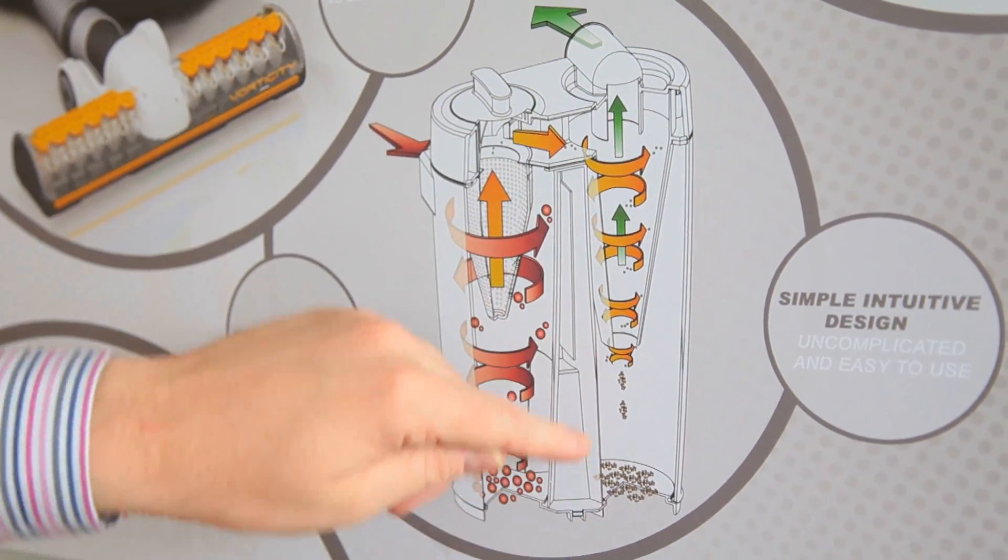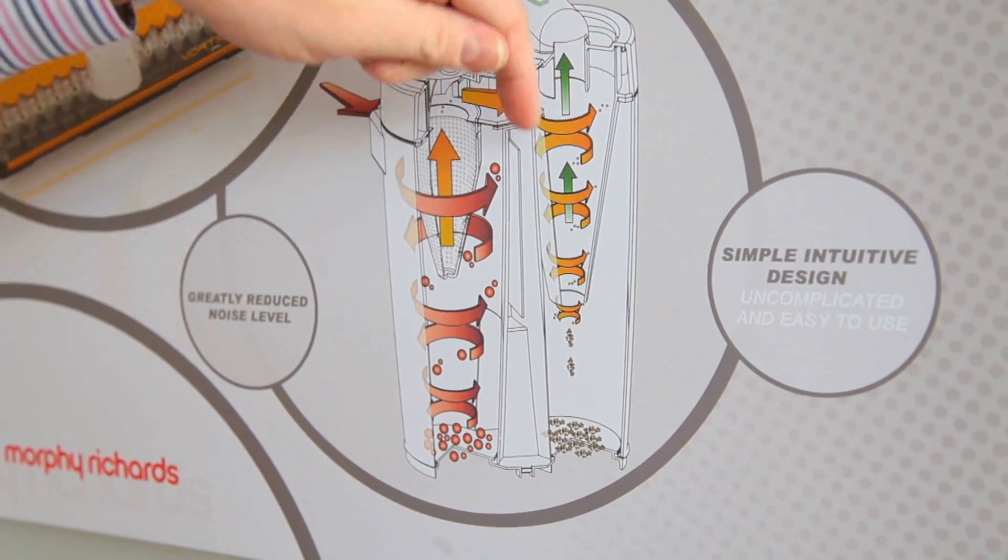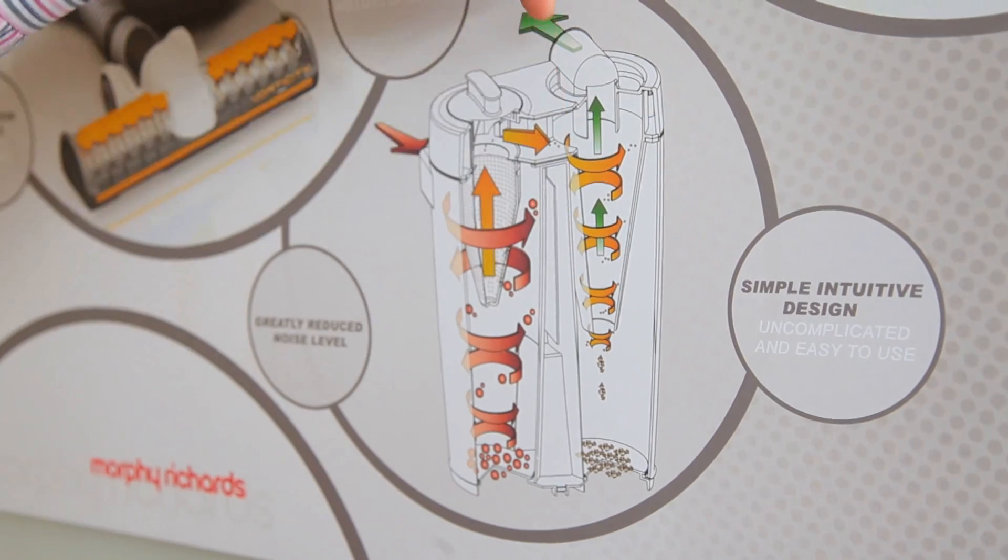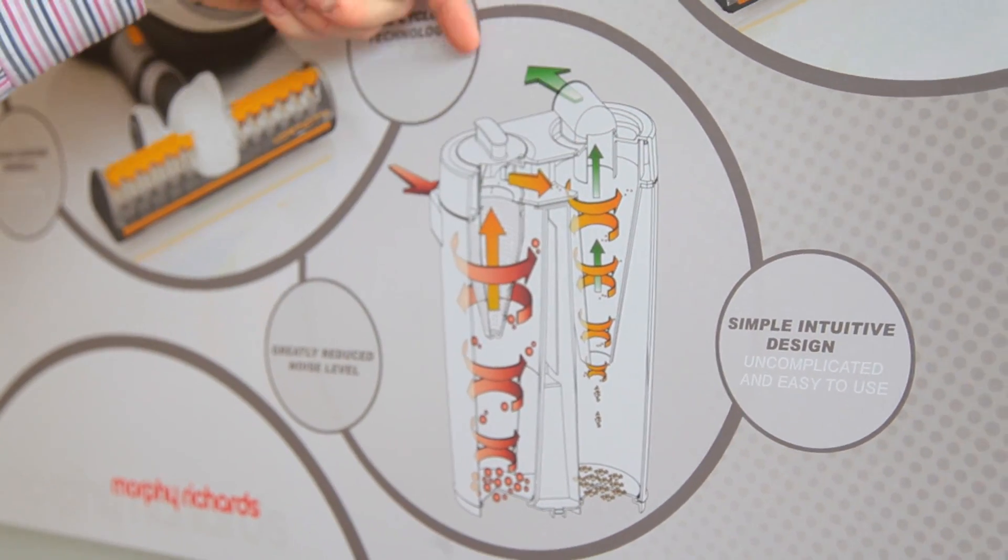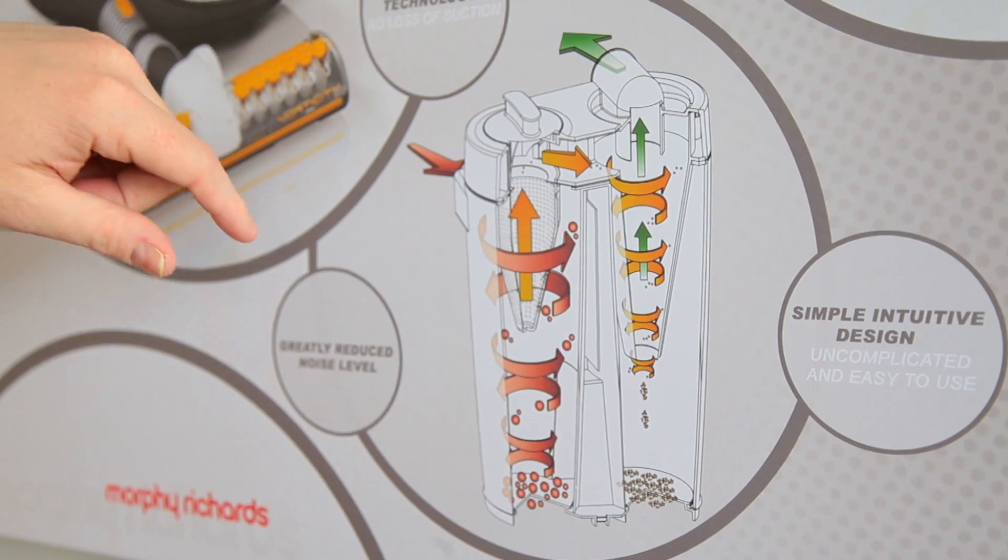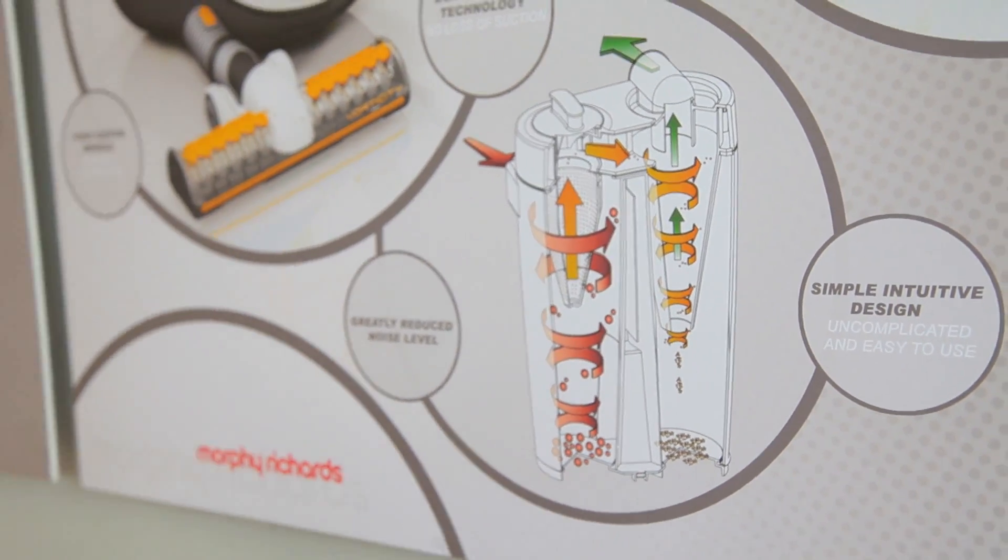Then all the dust and dirt goes to the bottom. And like the eye of the storm in a hurricane, it's kind of clean air in the middle that will then pass through the filter to the motor and out to the product.